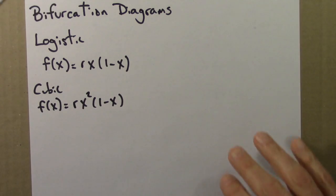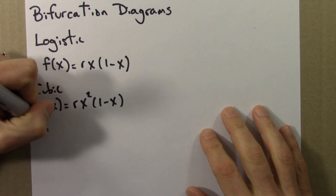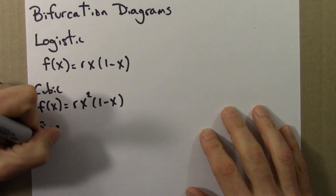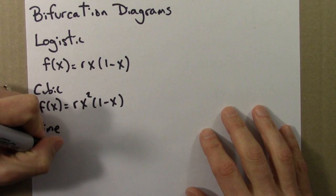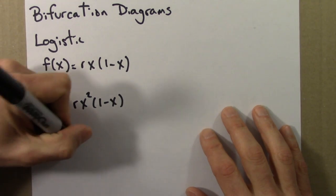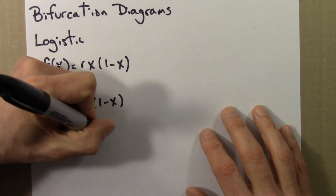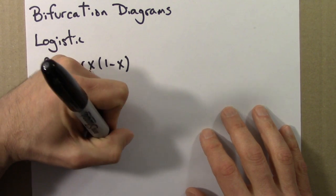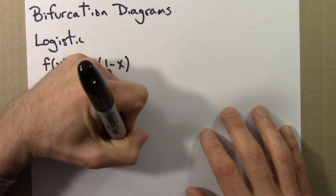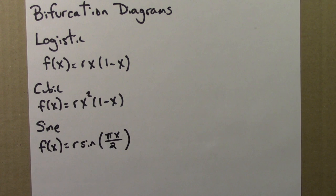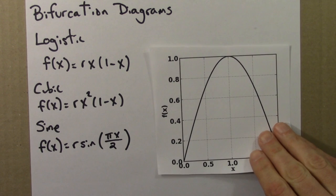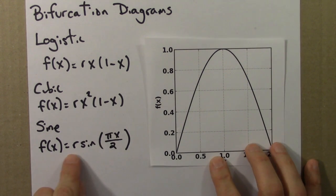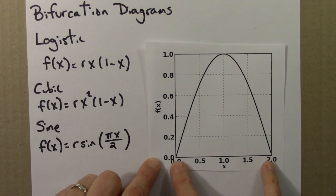So let's look at one more function. I'll look at the sine function. That's f(x) = r sin(πx/2). So there's a sine function. I think this is for r equals 1 here. Note that the x value now goes from 0 to 2 instead of from 0 to 1.